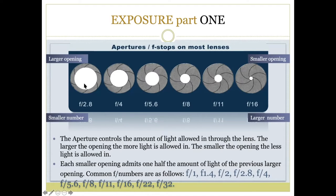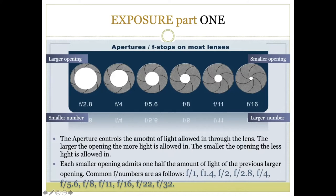The larger openings have actually lower numbers, and the tinier openings — the smaller the opening gets — the higher the number is. The aperture controls the amount of light allowed in through the lens: the larger the opening, the more light is allowed in; the smaller the opening, the less light is allowed in. Each smaller opening admits one-half the amount of light of the previous larger opening. This is a concept that will allow us, once we understand it, to understand how exposure equivalents work and how shutter speed, aperture, and ISO are all working together to get a good exposure.